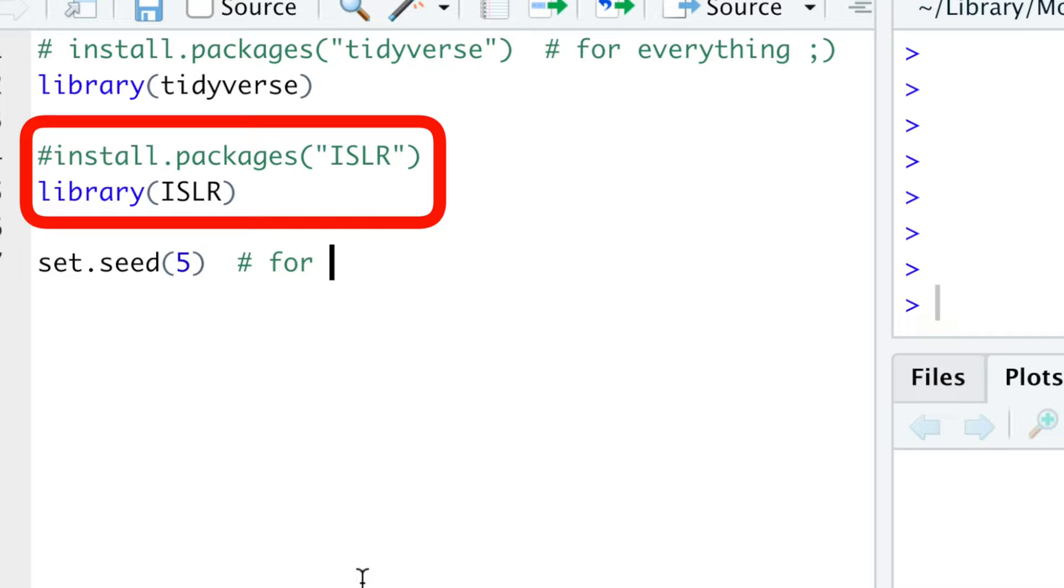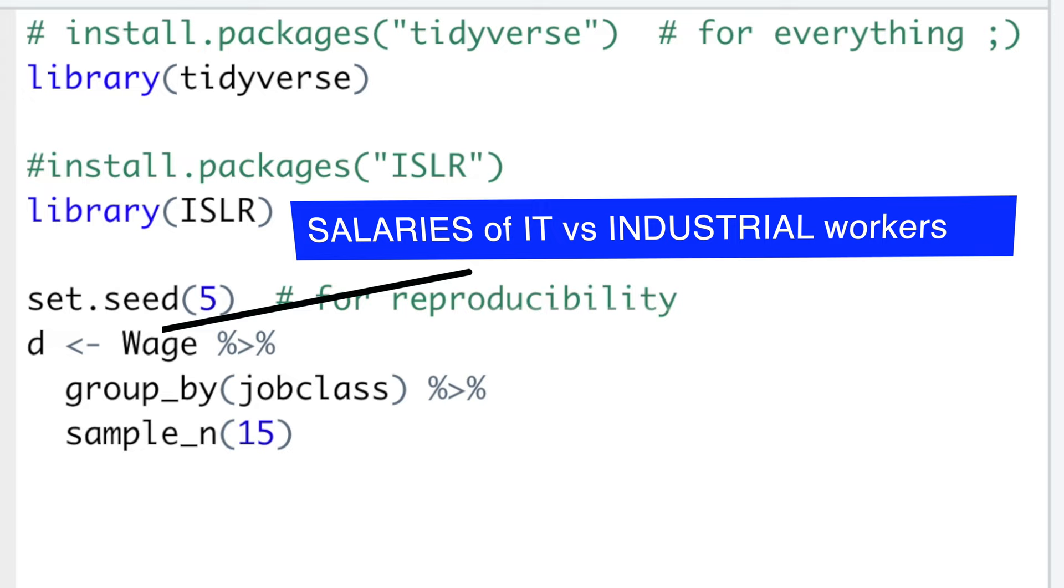ISLR package provides a wage dataset with salaries of IT and industrial workers. We'll take 15 random people from every group and compare their salaries in order to figure out who earns more.